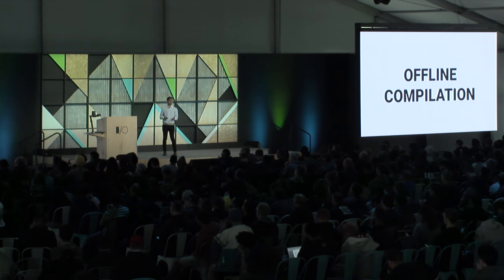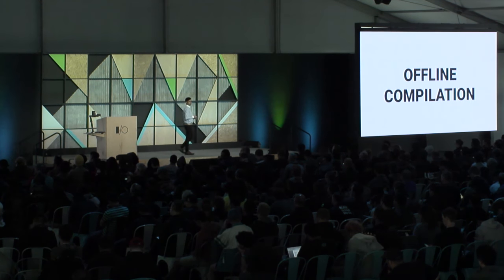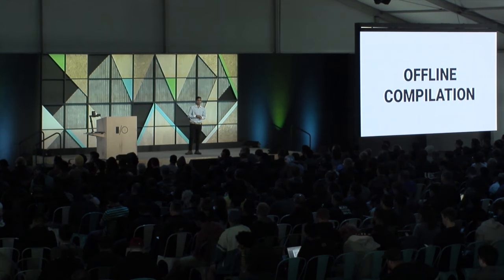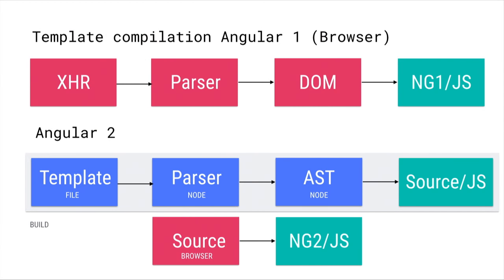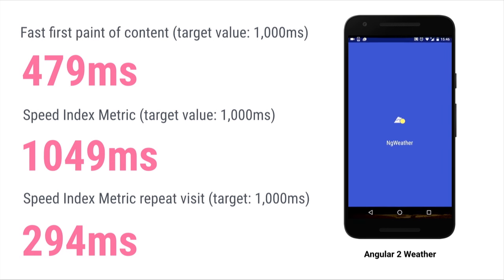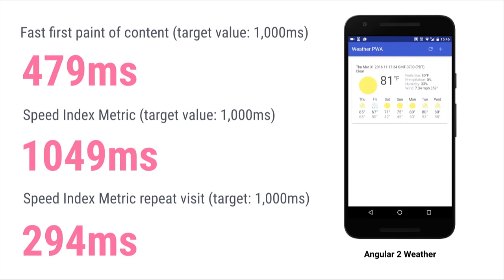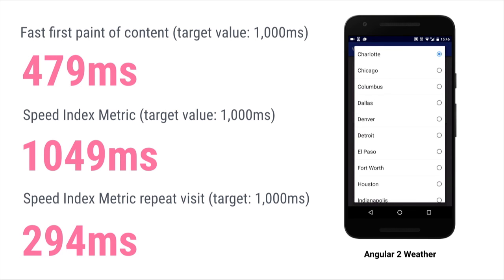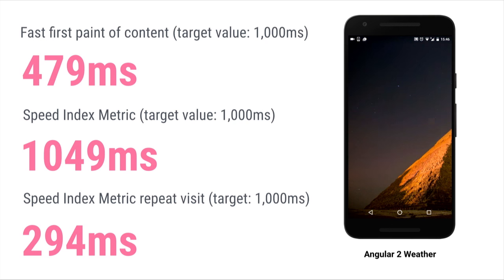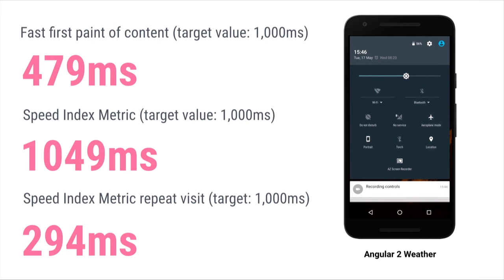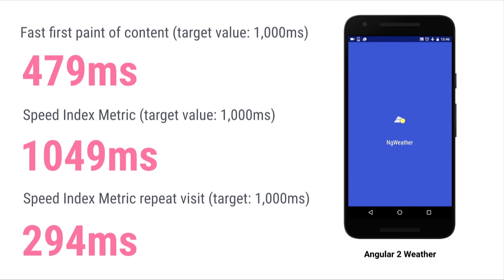In Angular 1, template compilation can happen many times during your application's lifecycle. Angular 2 tries to move some of this work into a build step, making it a lot more efficient. Offline compilation happens during a build step and no longer happens in the browser — we convert templates into code on the server so we don't have to ship the compiler at all. What this leads to in application performance is stark differences: fast first paint at 479 milliseconds, speed index almost exactly at 1,000, and repeat visit close to nothing — basically an instant application on repeat visit. This is kind of awesome.